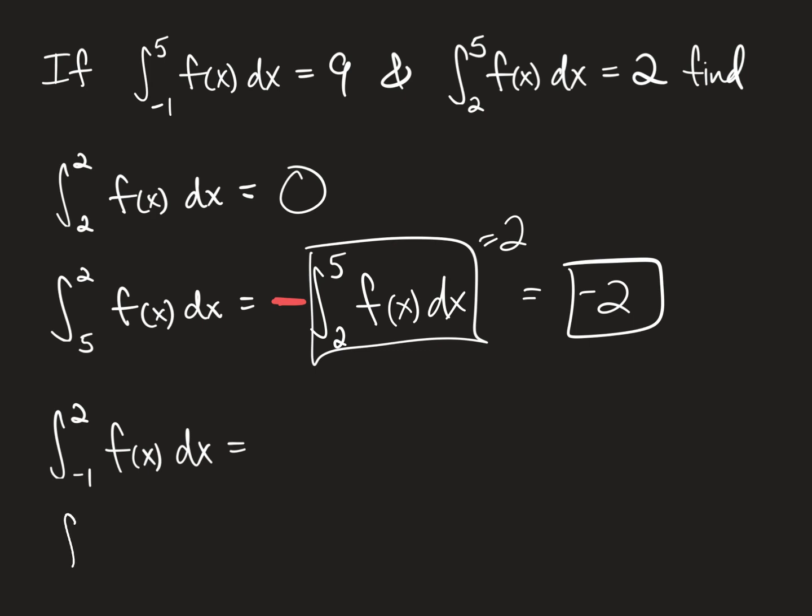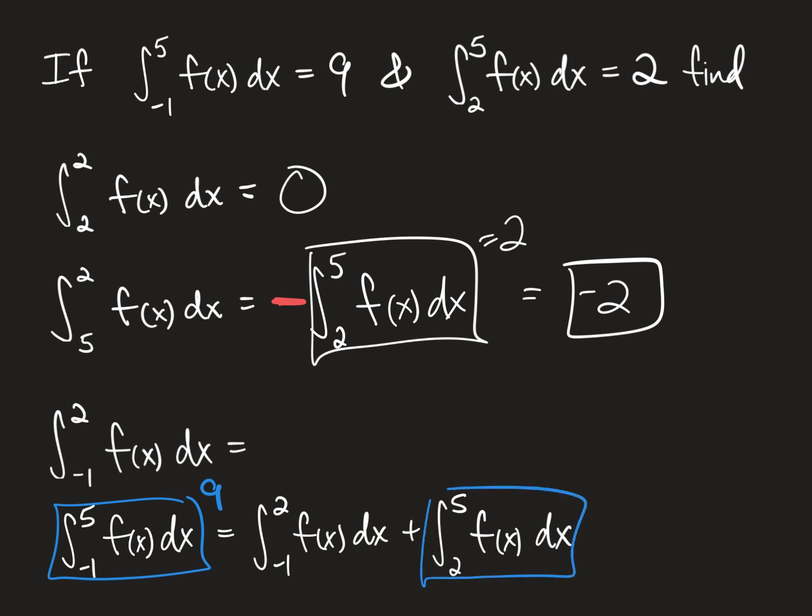So we can do some work off to the side here. The integral from negative one to five of f of x dx equals the integral from negative one to two of f of x dx plus the integral from two to five of f of x dx. From here, all you have to do is substitute in a couple numbers. This integral is nine as given at the top here. This integral here is equal to two. So let me do that. Two.